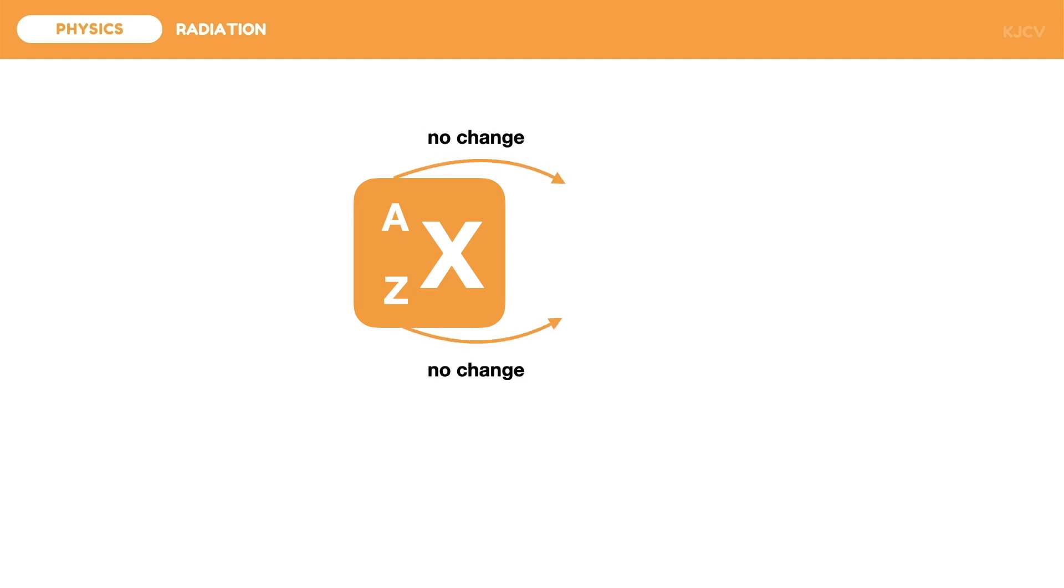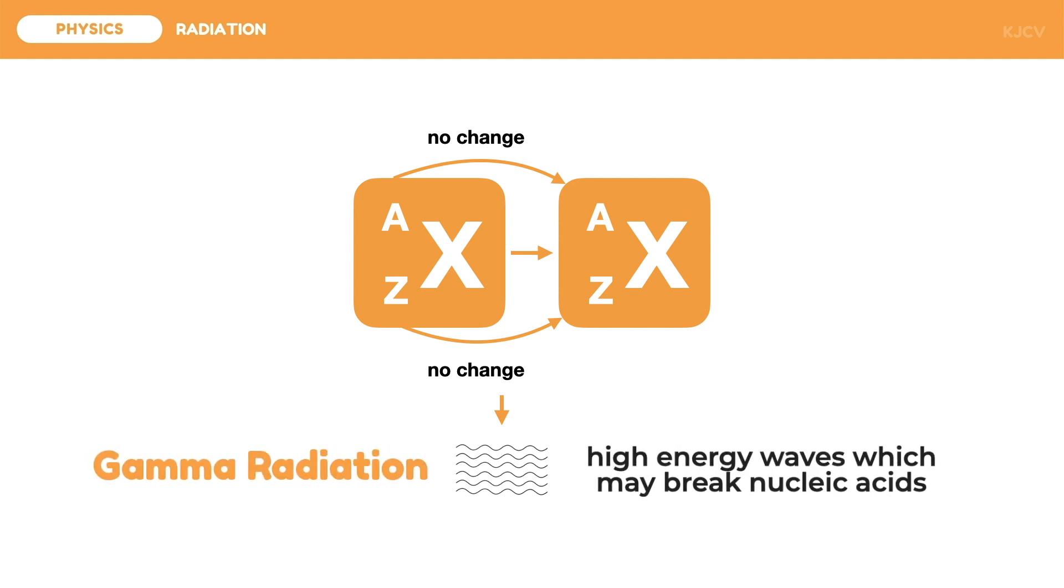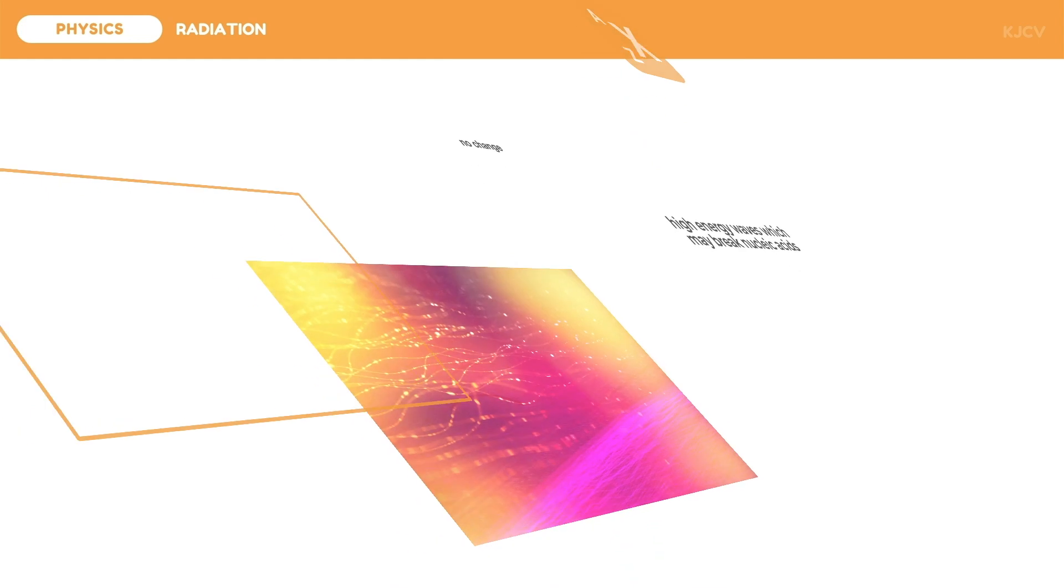For example, this unstable atom with atomic mass A and atomic number Z may undergo decay but may still retain its atomic mass and atomic number. Rather, it releases high energy waves which we call the gamma radiation. These are high energy waves which may break nucleic acids such as the DNA and RNA.